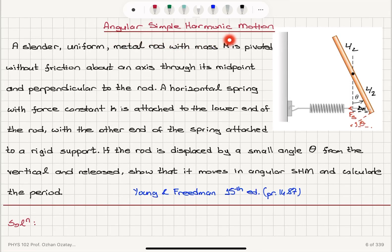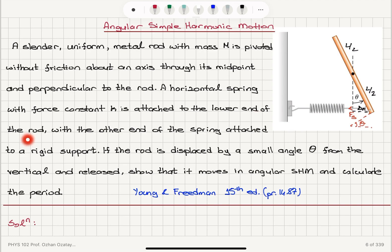Angular simple harmonic motion. A slender uniform metal rod with mass M is pivoted without friction about an axis through its midpoint and perpendicular to the rod. A horizontal spring with force constant K is attached to the lower end of the rod, with the other end of the spring attached to a rigid support. If the rod is displaced by a small angle theta from the vertical and released,